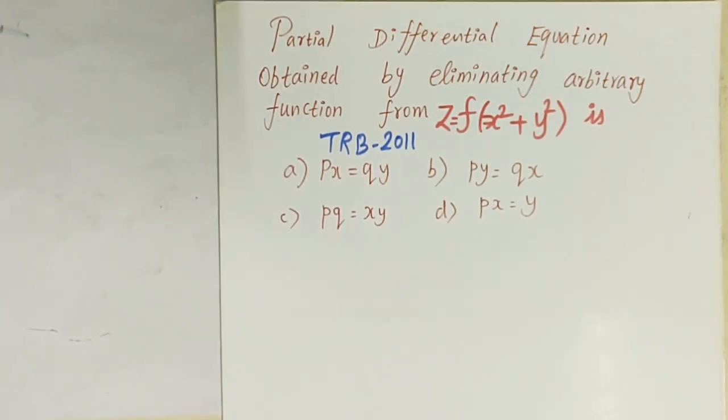Welcome to Komal Online Maths. We have z equal to f of x square plus y square. We need to eliminate the arbitrary function to get the partial differential equation.